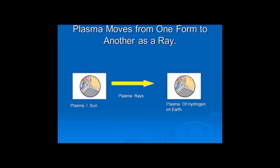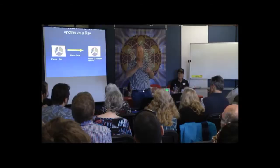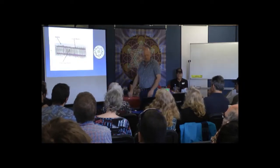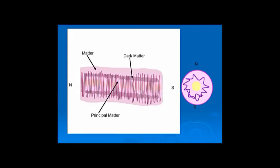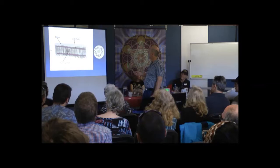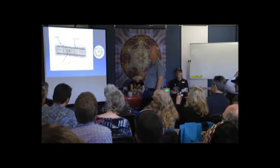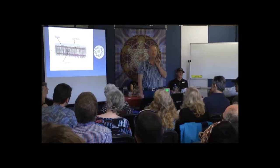As they're moving from the plasma of the sun to the plasma of hydrogen, or the earth as an example, between one and the other, you get that transition to the rays. In this ray, you've got matter on the outside, the principal matter or the anti-matter inside, and your dark matter over there. You've got the north and the south pole, and looking at it from the side angle, you've got north and south pole across that axis as well. So that ray contains the three fields.